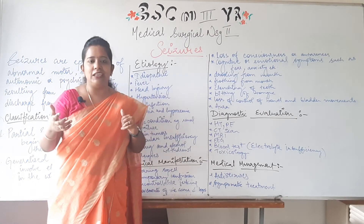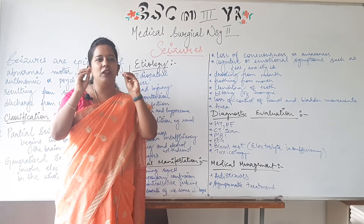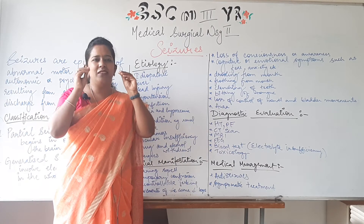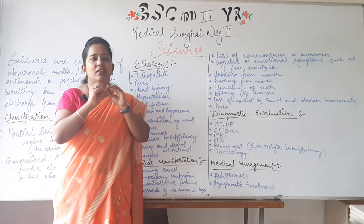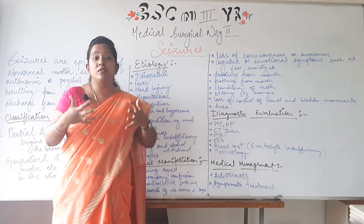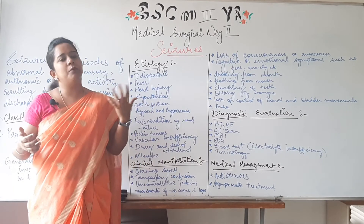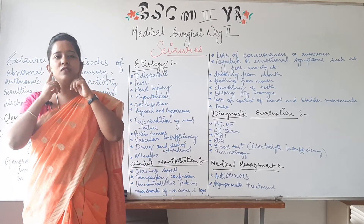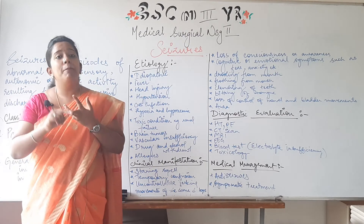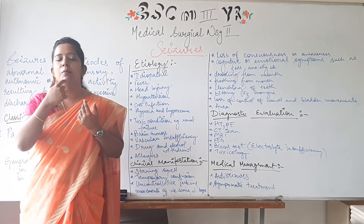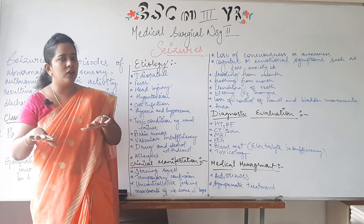Clenching means the teeth start getting ground together. In a patient with seizures, because they cannot stop these movements, the teeth start rubbing. Biting of the tongue can occur if the tongue comes between the teeth. These are all symptoms of a seizure episode.